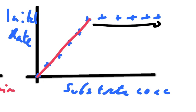Once the graph levels off, increasing substrate concentration no longer increases the rate of reaction, meaning substrate is no longer the limiting factor. At that point, the limiting factor is likely enzyme concentration, or possibly pH or temperature. It's important to measure the initial rate of reaction right at the beginning of the experiment, before substrate concentration starts to fall.